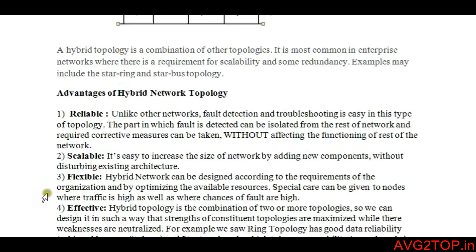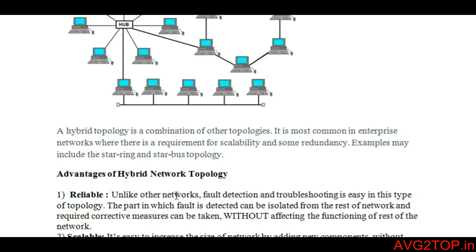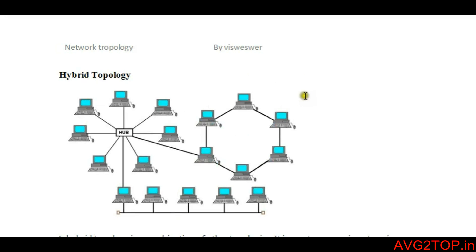Another disadvantage is costly infrastructure, which means a large scale is required and lots of cables are involved. Many networking devices have to be implemented to create an architectural design like this. Overall, hybrid topology is a combination of star, ring, and bus topologies.